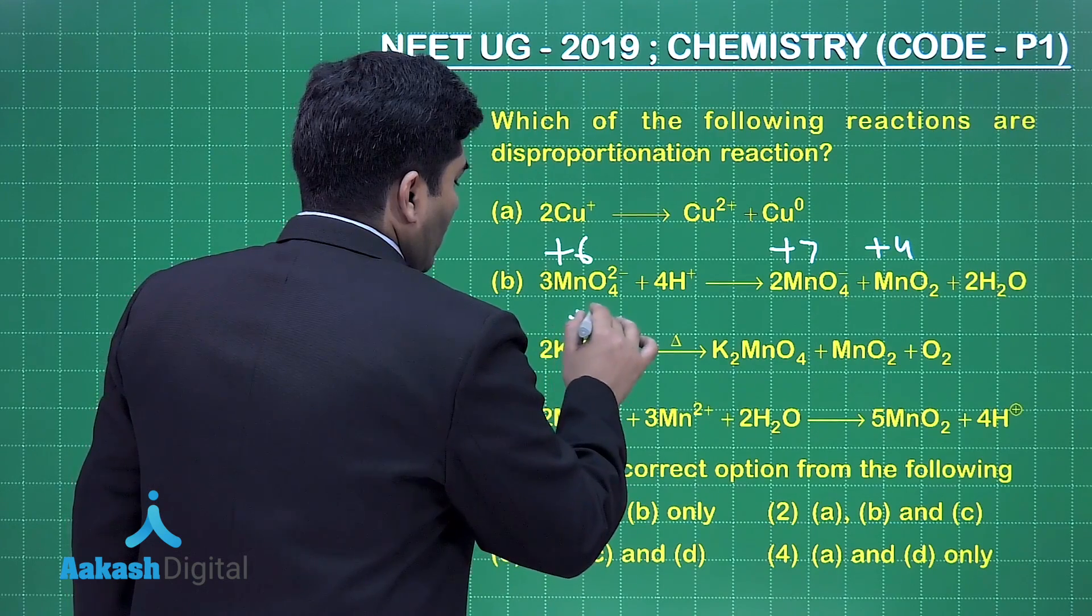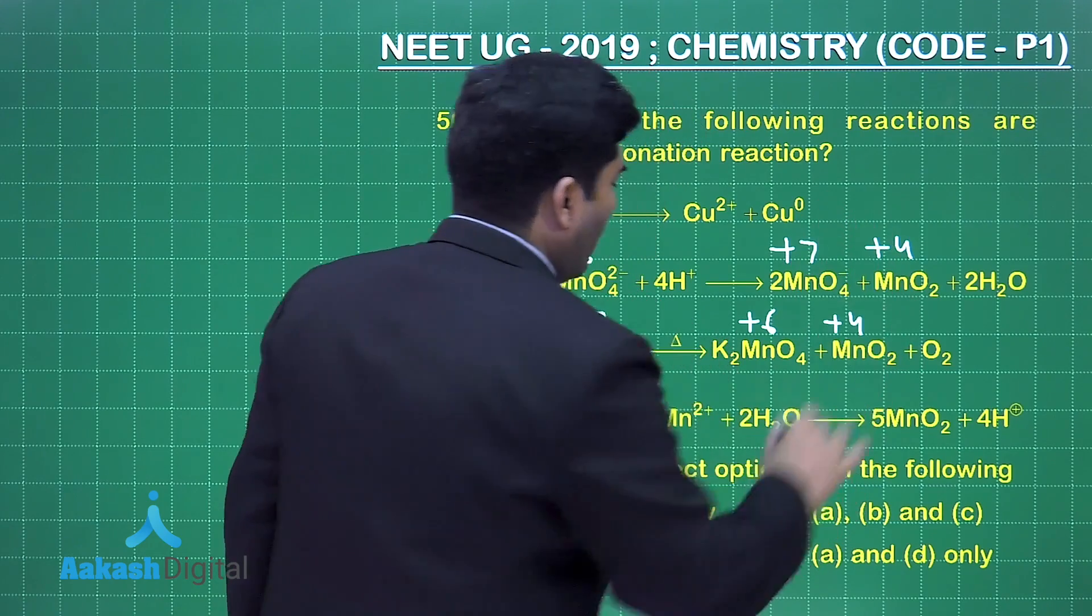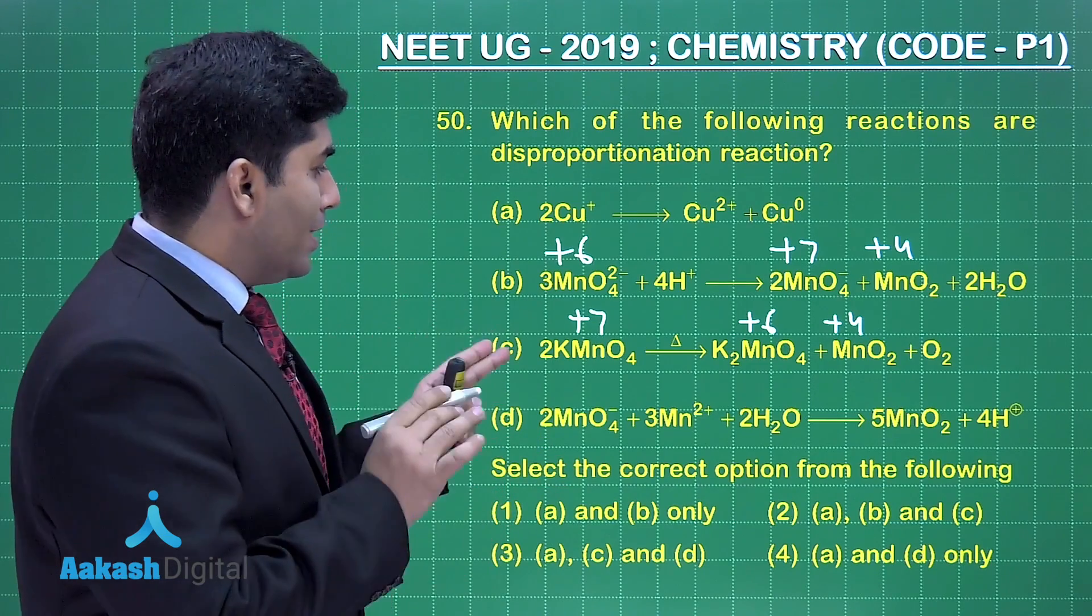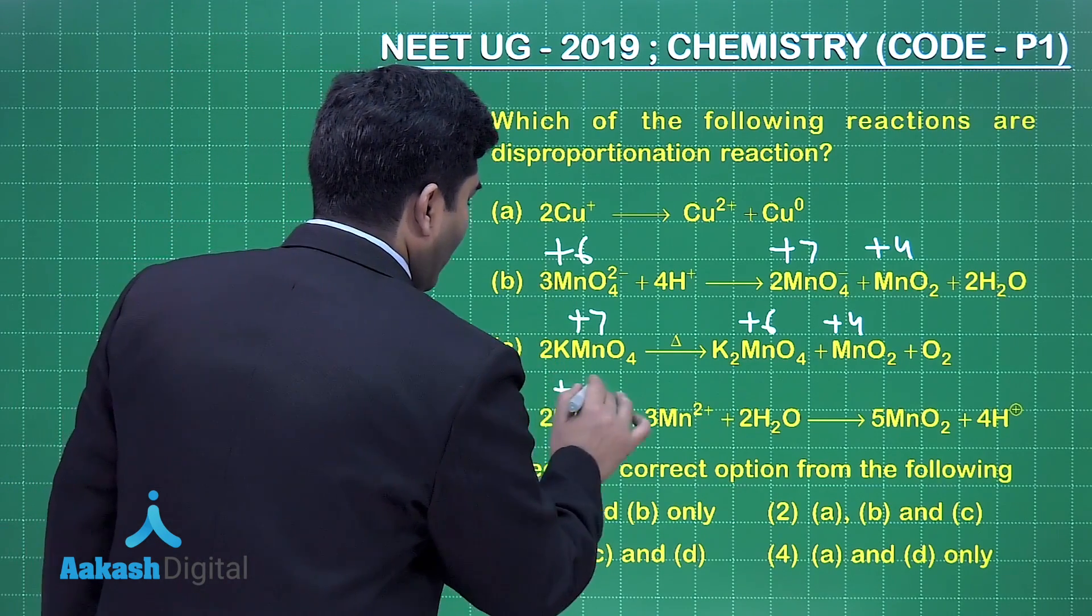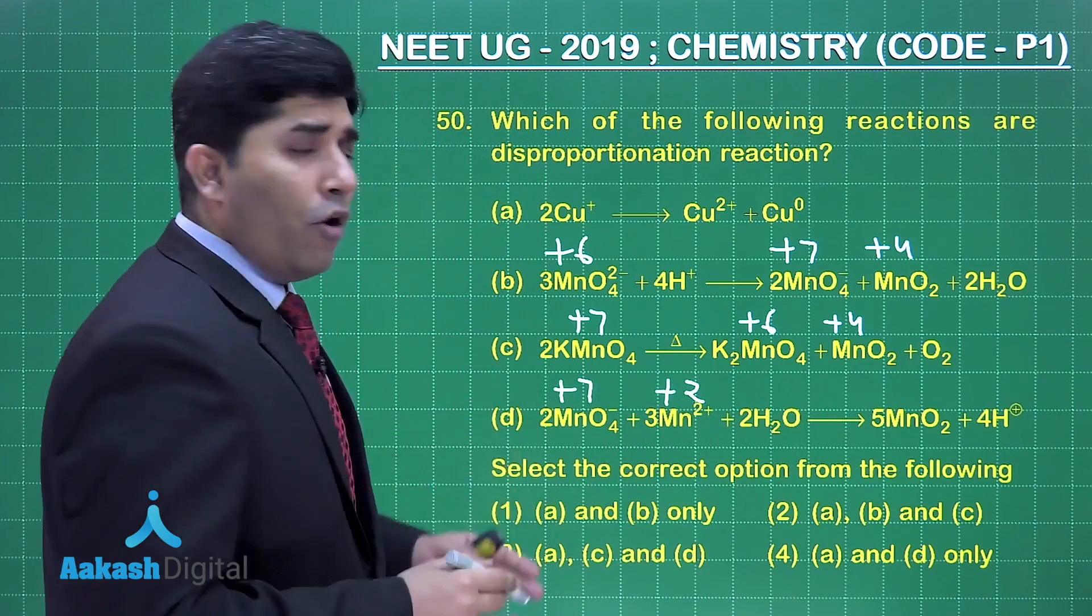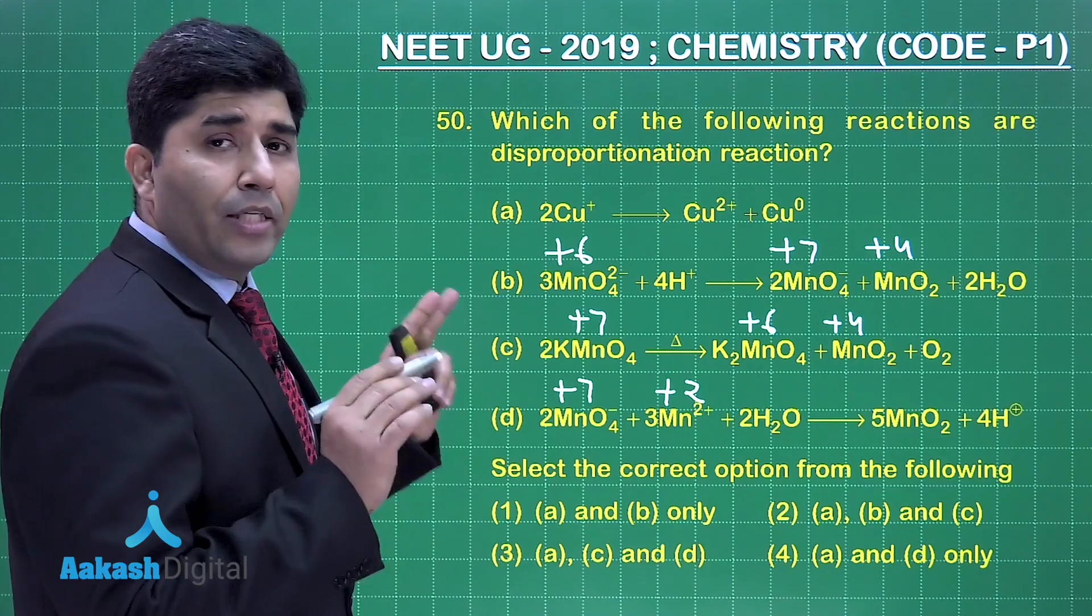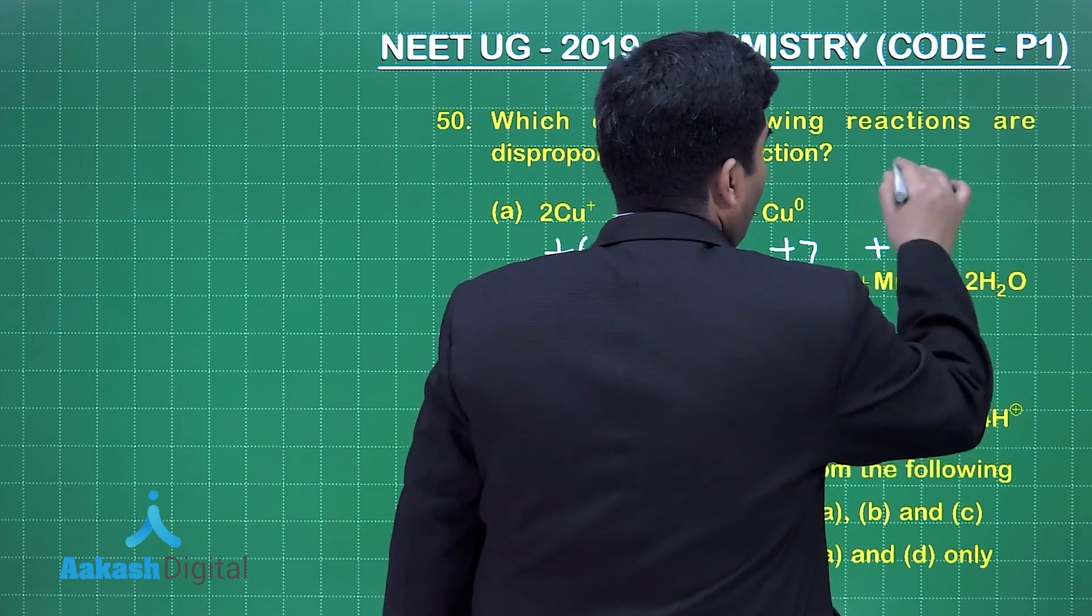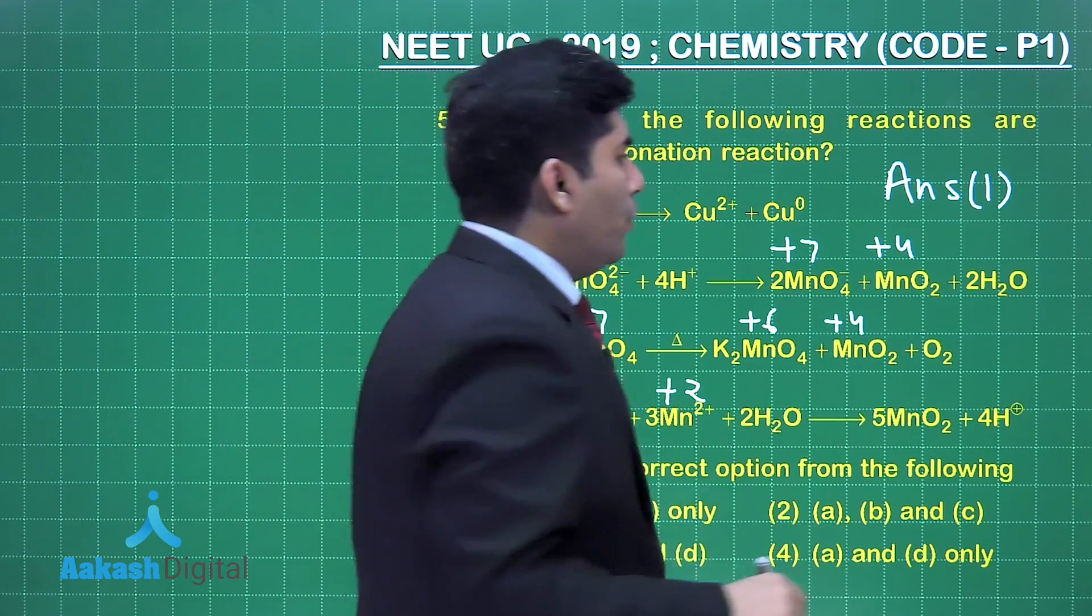Now here in C it is +7, here it is +6, the oxidation number and +4 oxidation number is changing, but it is decreasing. That's why in C it is reduction, this is not disproportionation. And if you talk about D it is +7 and it is +2 and they are forming a single species, so this is obviously not a disproportionation reaction. That's why A and B are the reactions which are disproportionation reaction. That's why the option number first is the correct answer.